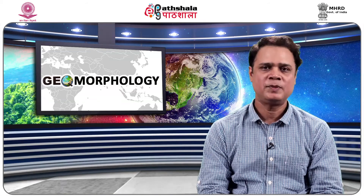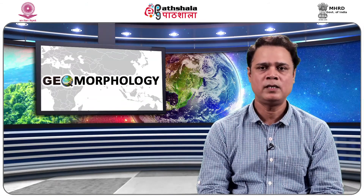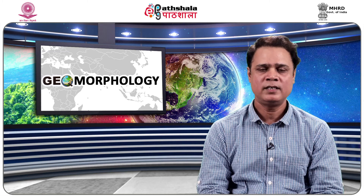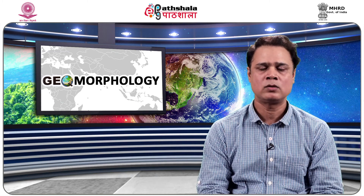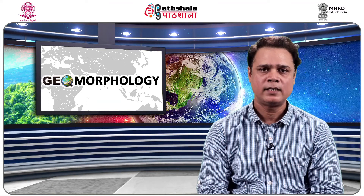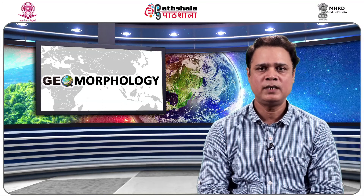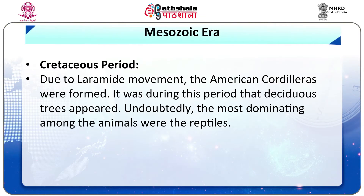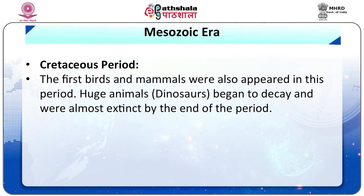The Cretaceous period began 135 million years ago and ended 70 million years ago; it was about 60 million years long. It is well known for its widespread deposits of chalk. The other major rocks of this period are soft sandstone, clay and limestone. Due to the Laramide movement, the American Cordilleras were formed. It was during this period that deciduous trees appeared. The most dominating among the animals were the reptiles. The first birds and mammals also appeared in this period. Huge animals like dinosaurs began to decline and were almost extinct by the end of the period.